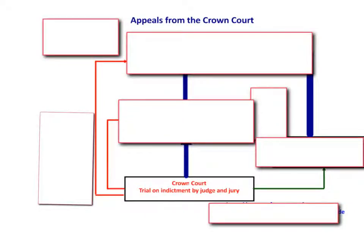This presentation is designed to explain appeals from the Crown Court. Crown Court trials are before a judge and a jury and are hearings of criminal cases on indictments, so indictable offences and also triable either way offences where the defendant has elected for Crown Court trial.